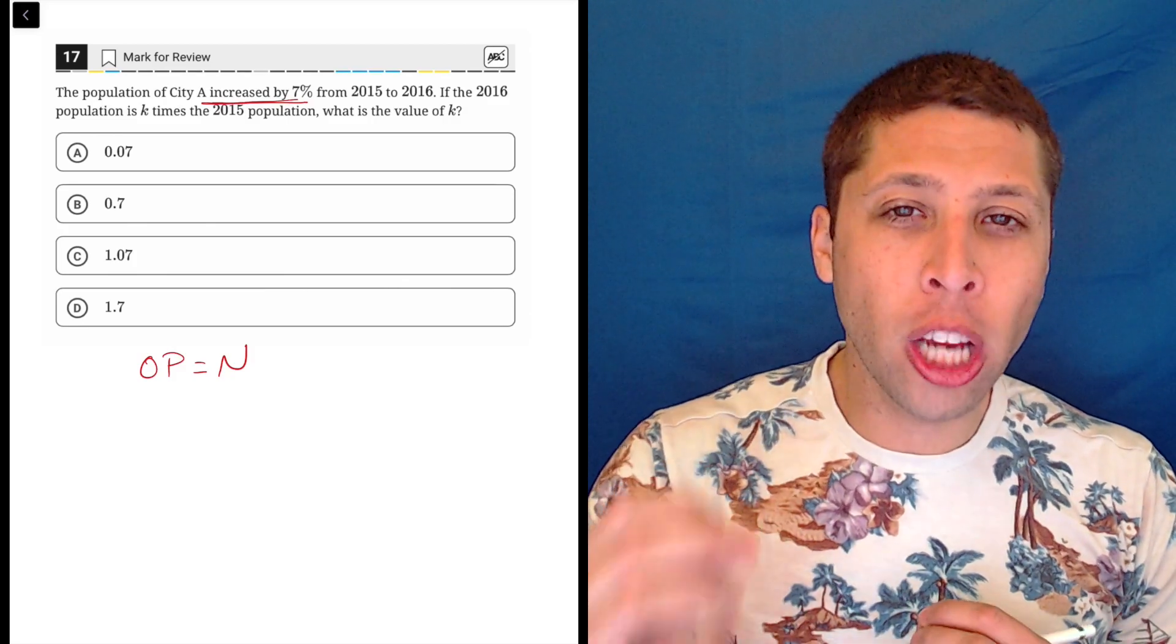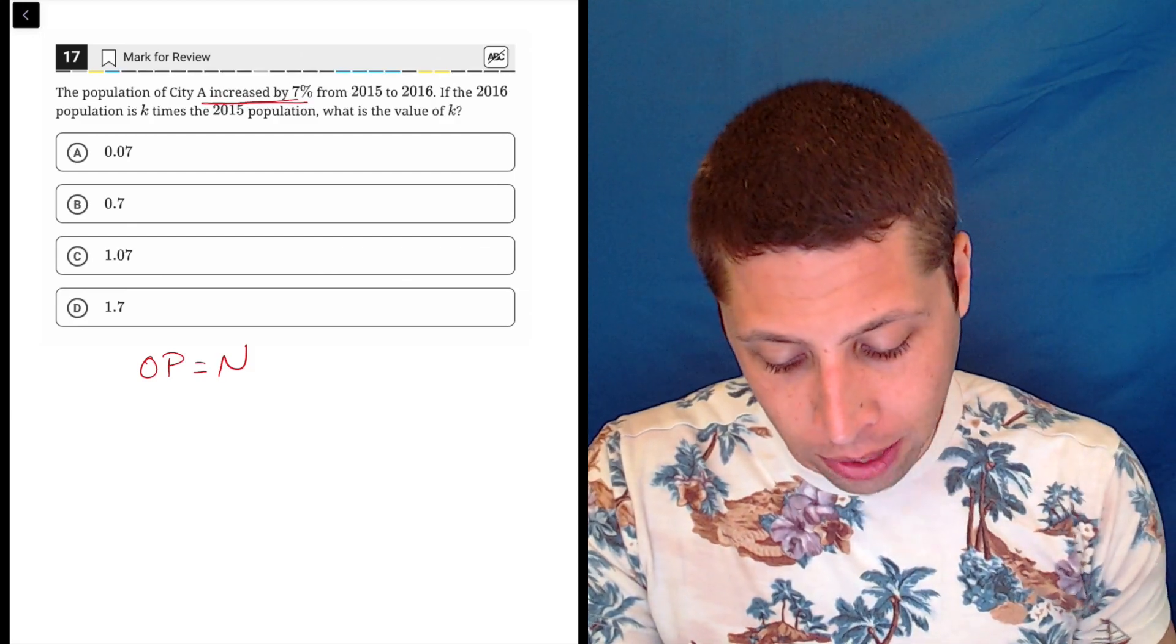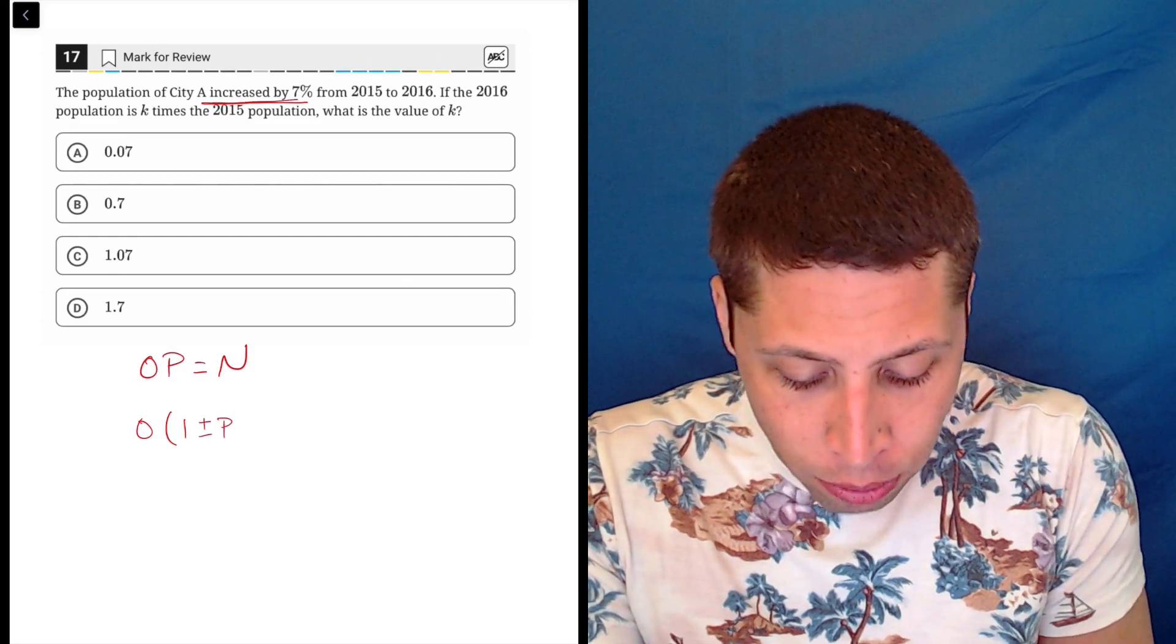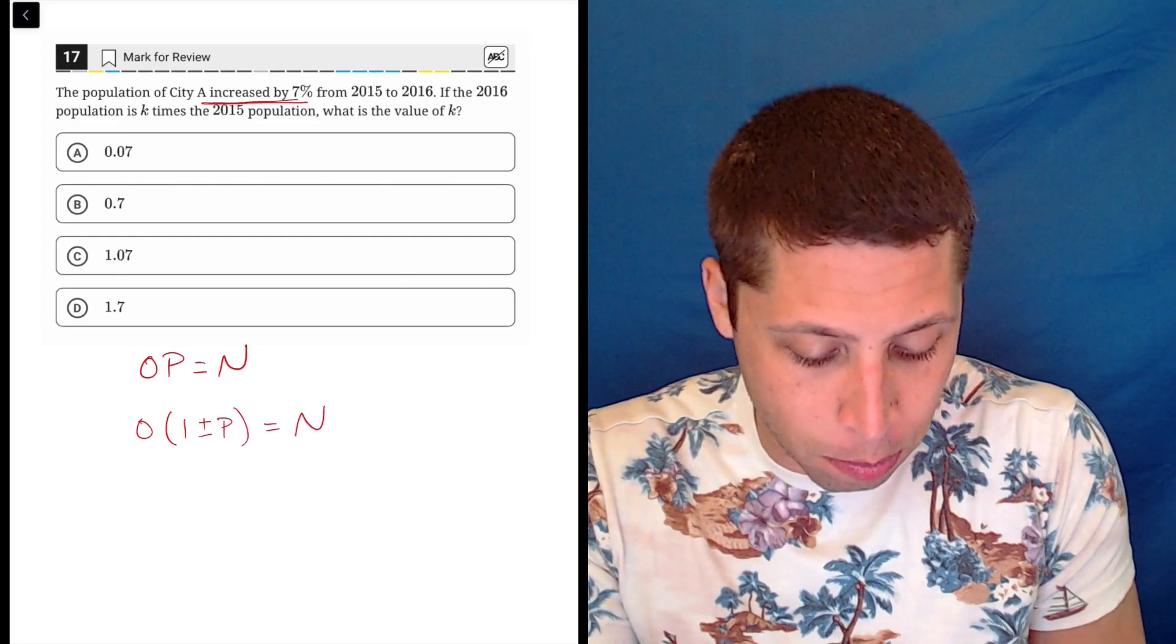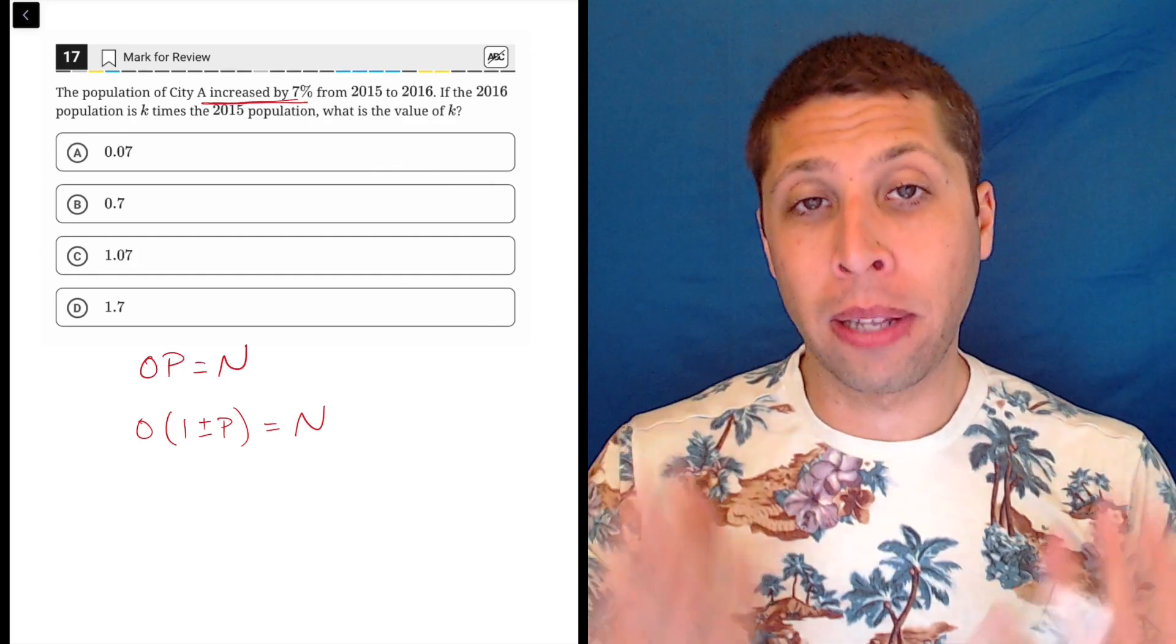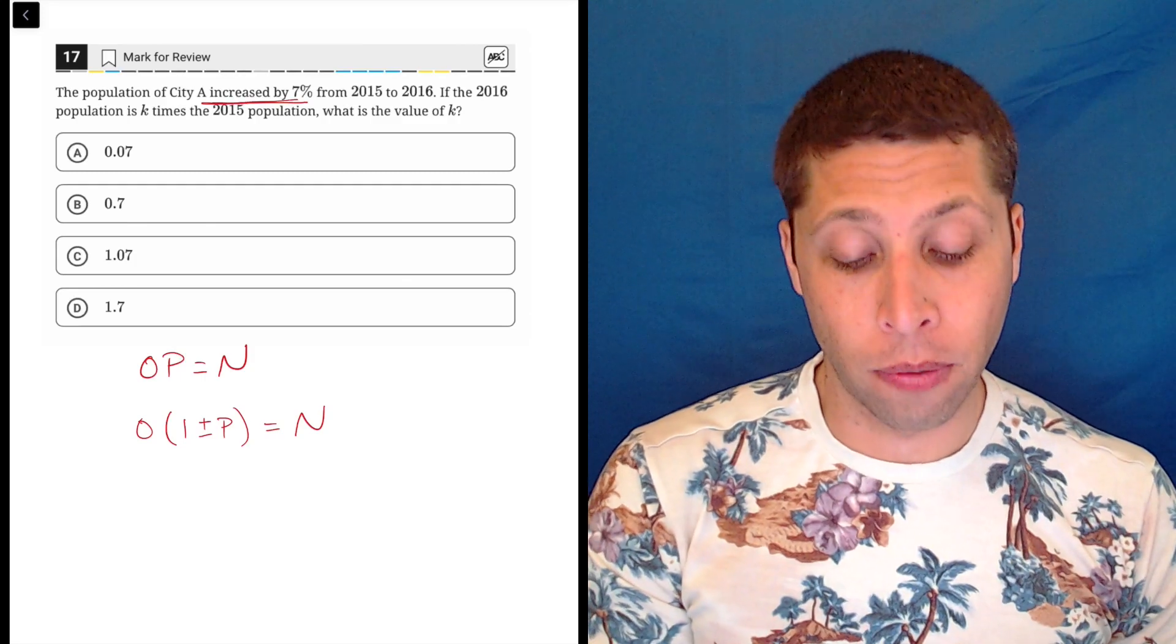But when it's a change in percentage, an increase or a decrease, I use a slightly modified version of this where instead of P being just kind of on its own, it now gets mixed up in this little parentheses piece. It's the original value times one plus or minus P, depending on whether it's an increase or a decrease. And that gives us our new value.